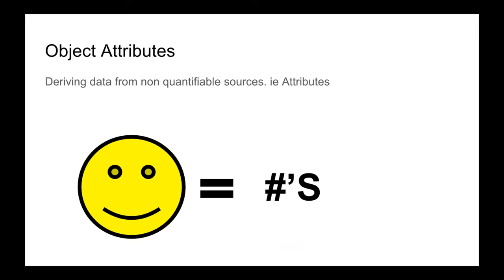One of the first things we do to create this impression is use attributes. Everyone who's played an RPG, racing game, or fighting game should be familiar with attributes. What attributes are is deriving data from non-quantifiable sources. Asking how strong someone is is very complicated — is it core strength, raw lifting power, endurance? There are many different measures. We want to decide which ways are relevant for our game, and we call those attributes.